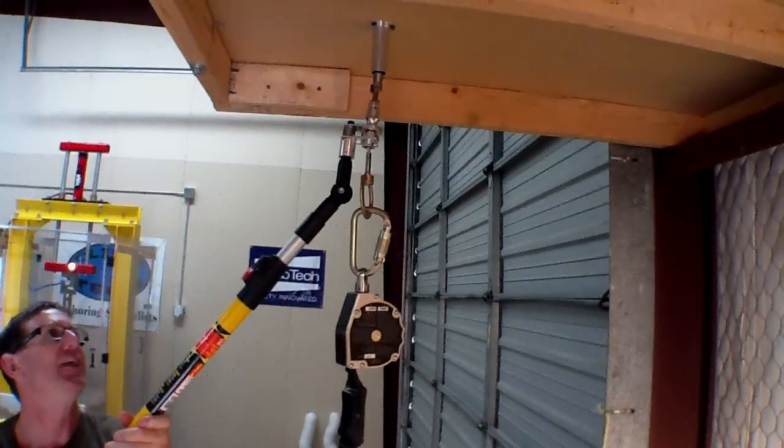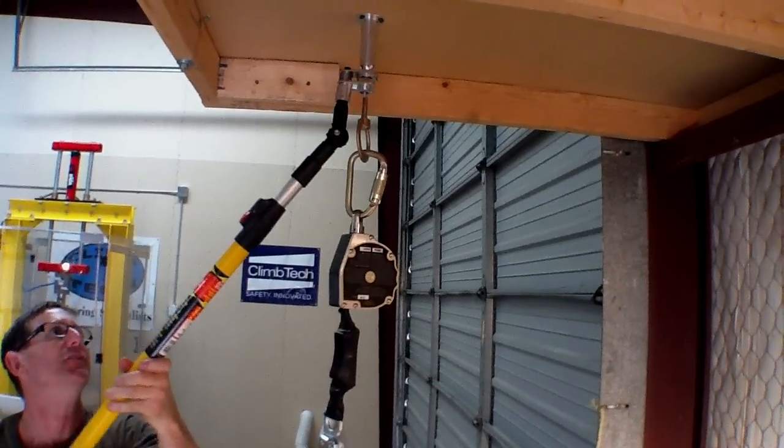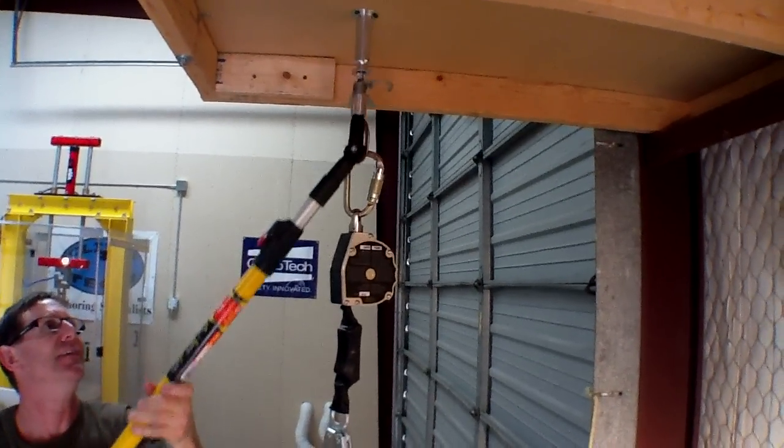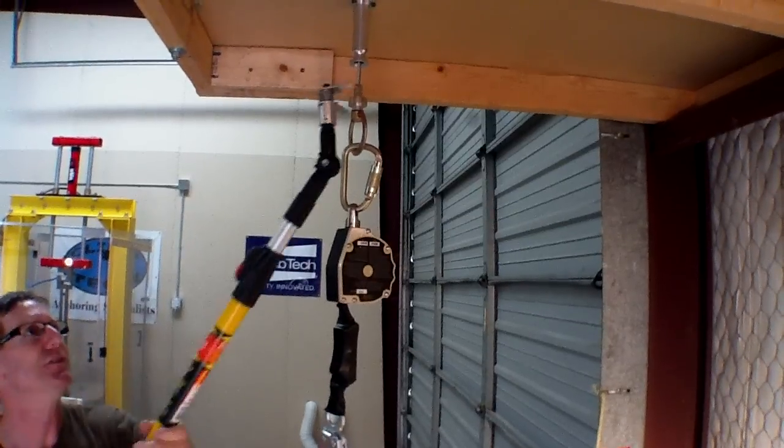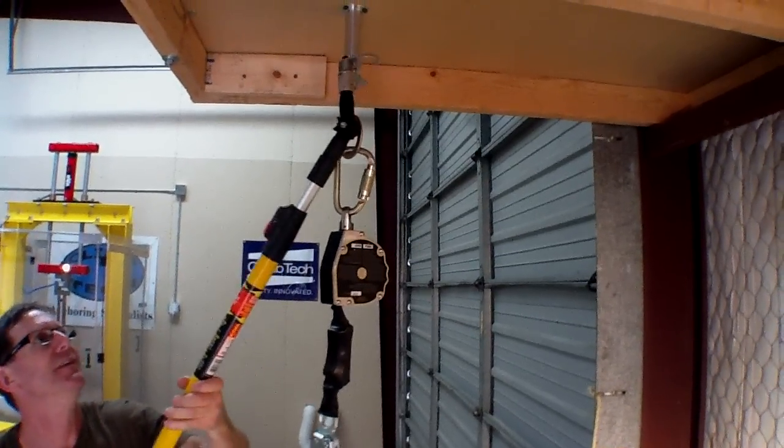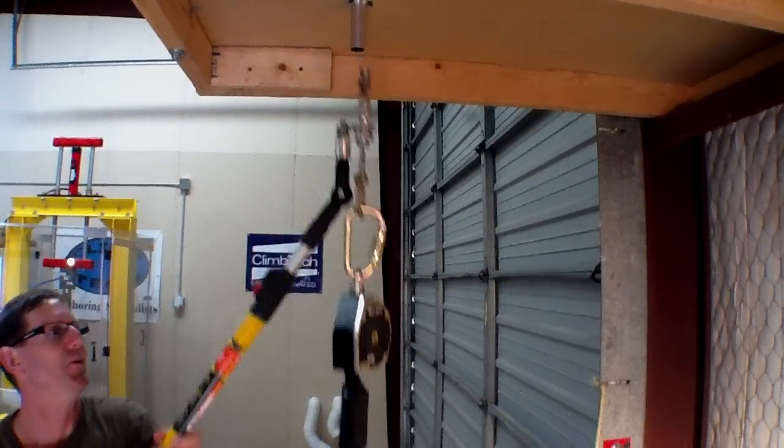So he's standing on the ground. This could be 14 feet below. He inserts it in. The anchor is rated for 5,000 pounds. He wants it out. He pulls it out.